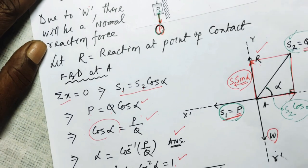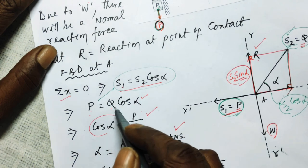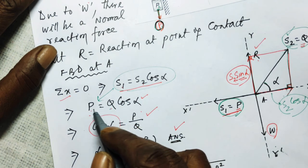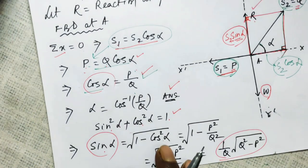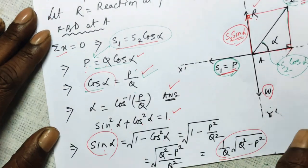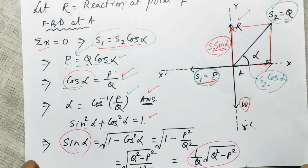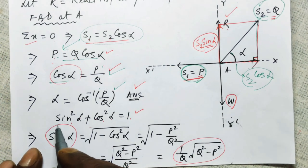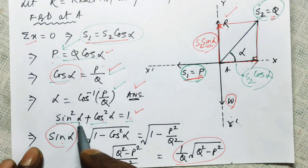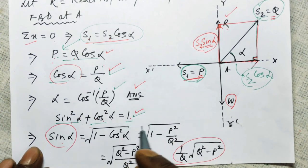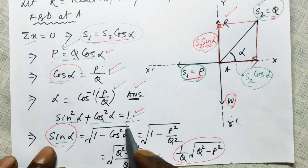Applying sigma X equals zero: S1 equals S2 cos alpha, and S1 equals P, therefore P equals Q cos alpha. So cos alpha equals P over Q, and therefore alpha equals cos inverse of P over Q. From trigonometry, sin²alpha plus cos²alpha equals 1, so sin alpha equals the square root of 1 minus cos²alpha.